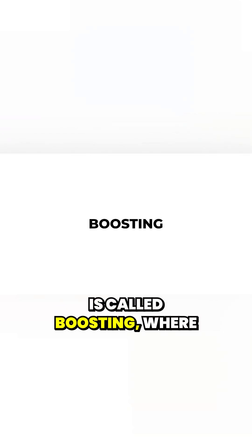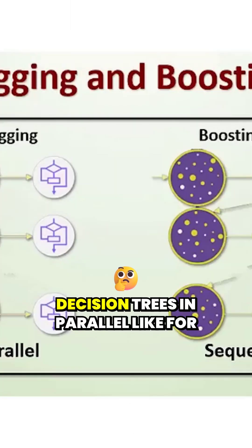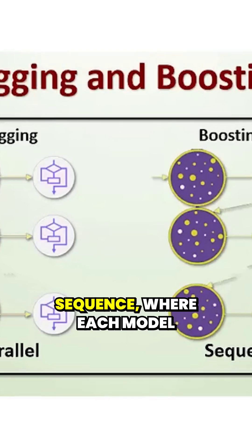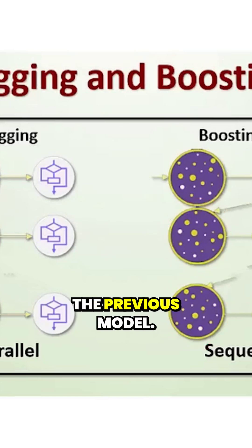Another type of ensemble method is called boosting, where instead of running many decision trees in parallel like for random forests, we train models in sequence, where each model focuses on fixing the errors made by the previous model.